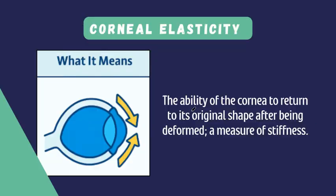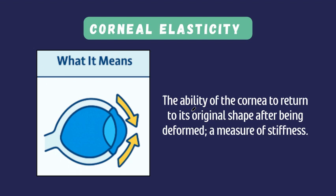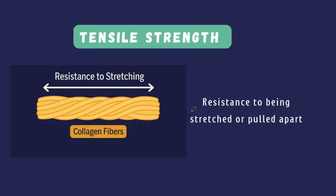The first biomechanical property is corneal elasticity. Imagine your cornea like a trampoline — when pressure pushes it in from blinking, rubbing, surgery, or intraocular pressure from inside, it doesn't just collapse. The cornea springs back. That bouncing-back ability is what we call elasticity, or more technically, Young's modulus — a measure of how stiff or resilient a material is. The next property is tensile strength: the maximum force the cornea can withstand before it gets deformed or stretched.